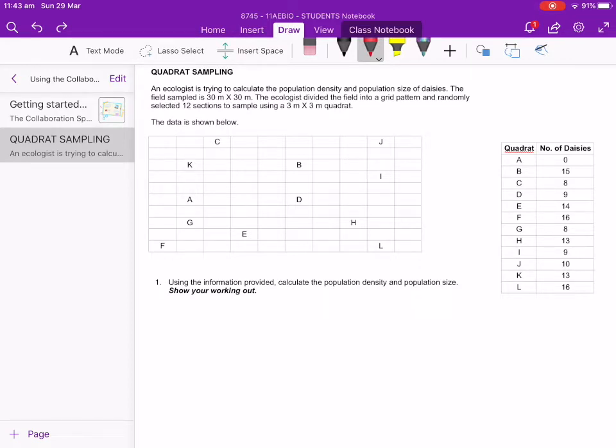So this is just an example exercise. We've got an ecologist trying to calculate the population density and the population size of daisies in a field. Now the field's 30 metres by 30 metres.